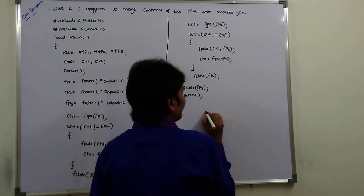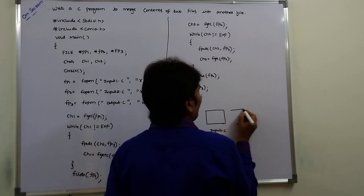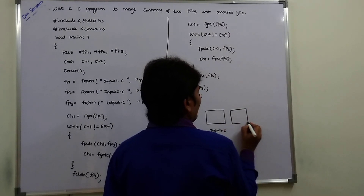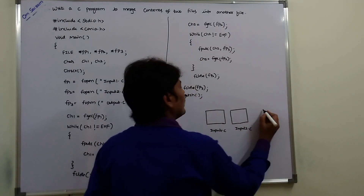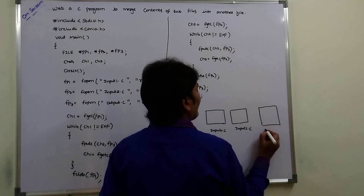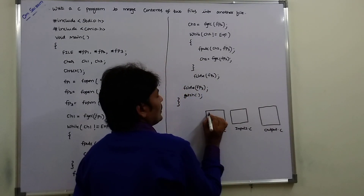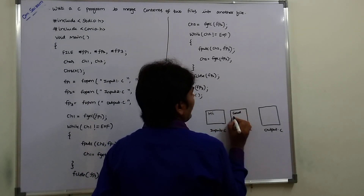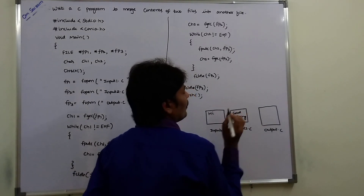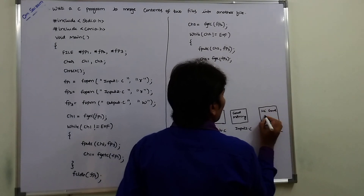Now we have taken two files. This is input1.c and this is another file input2.c, and this is another file output.c. input1.c contains 'Hi', input2.c contains 'Good Morning', and the output is 'Hi Good Morning'.